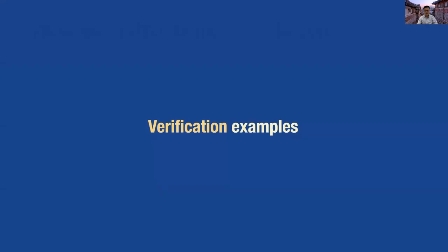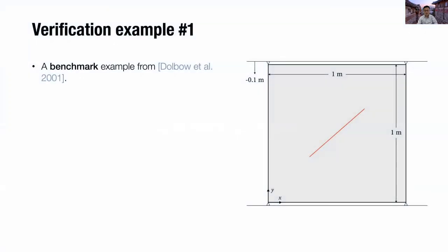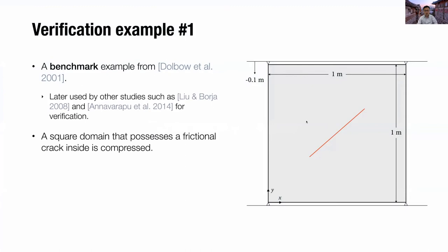Here are some verification examples of the proposed method. The first example is adopted from Dolbow et al., which was later used by many studies such as Regueiro and Borja and Annavarapu et al. In this problem, a square domain containing a frictional crack is compressed from the upper boundary.